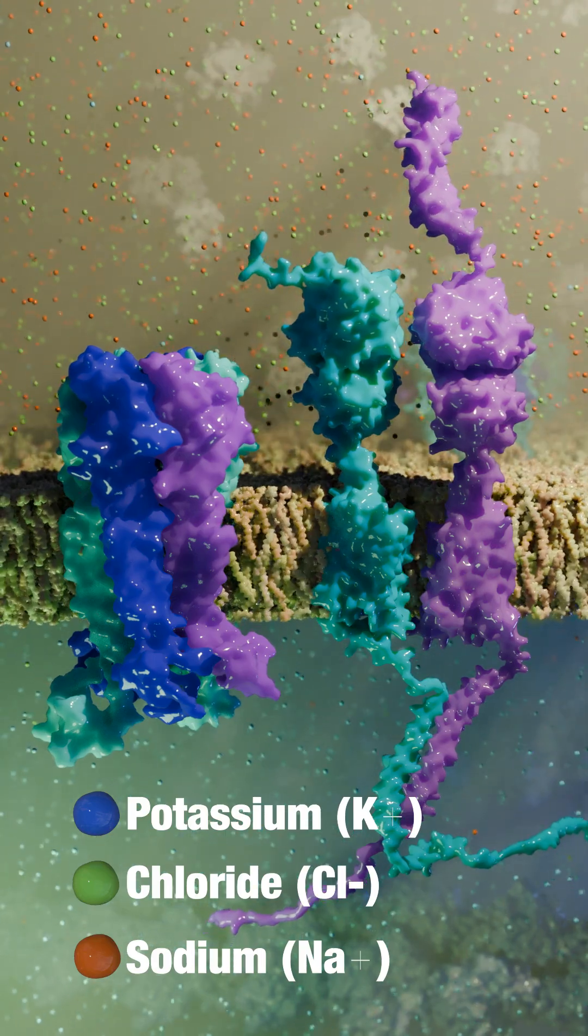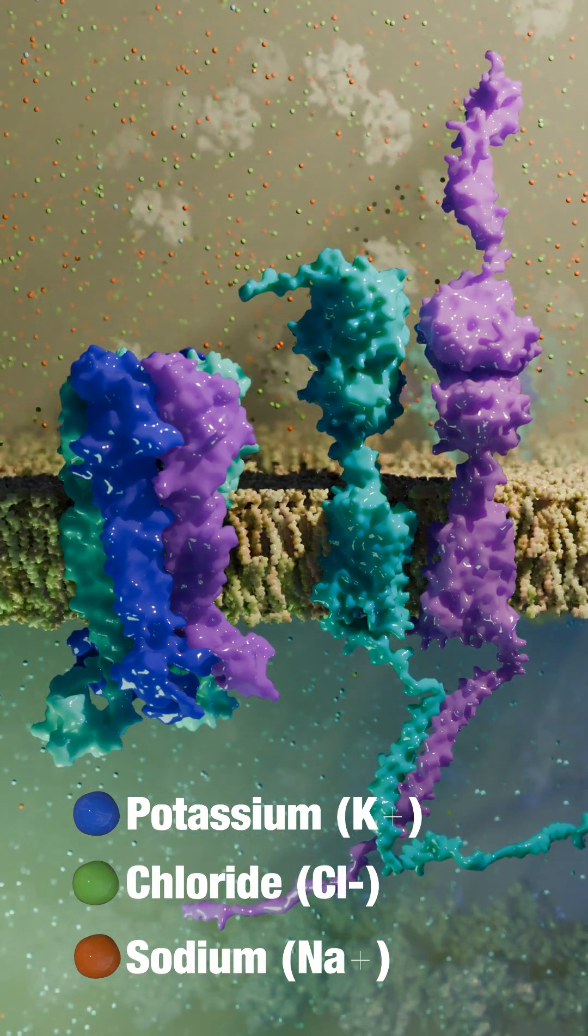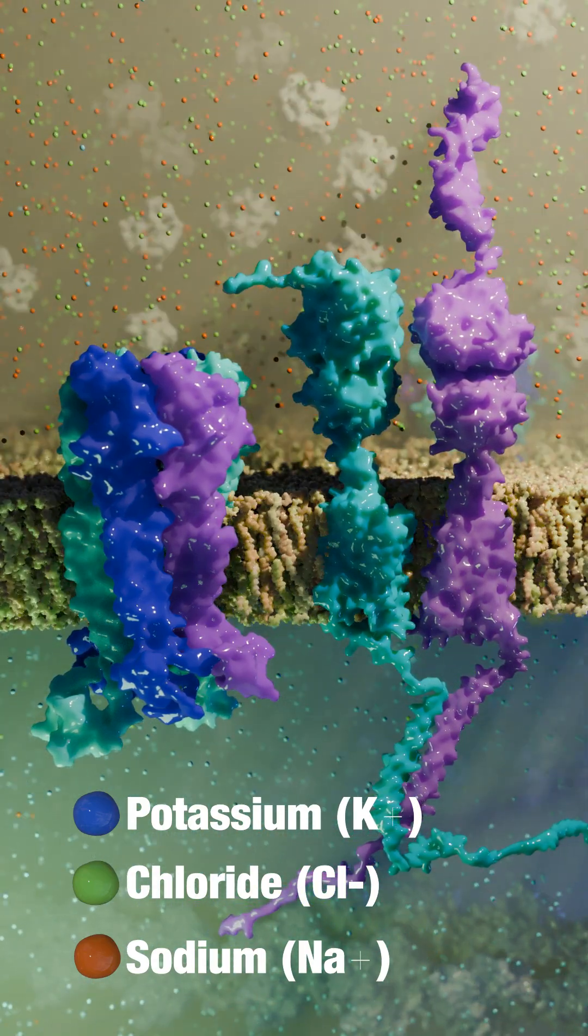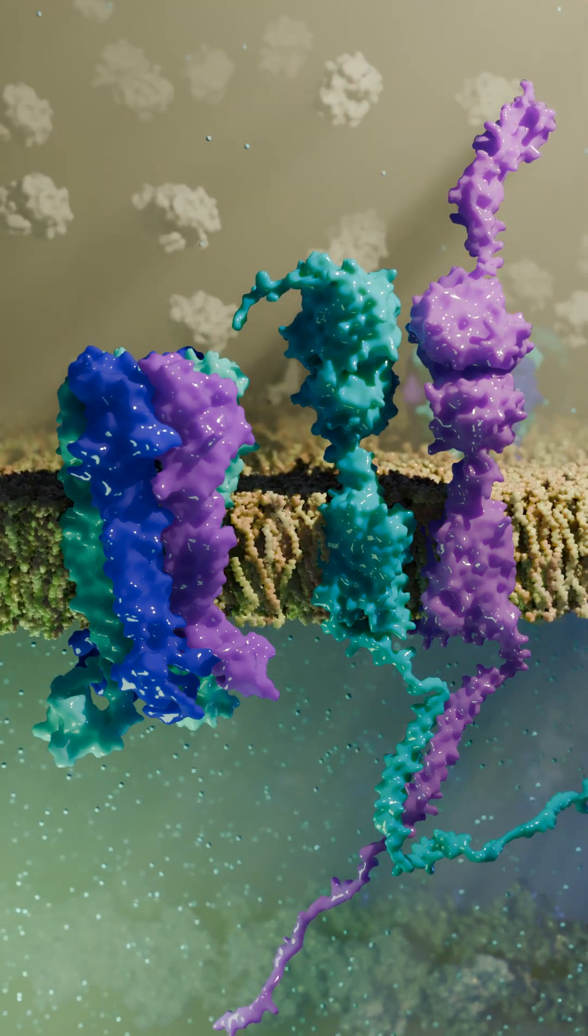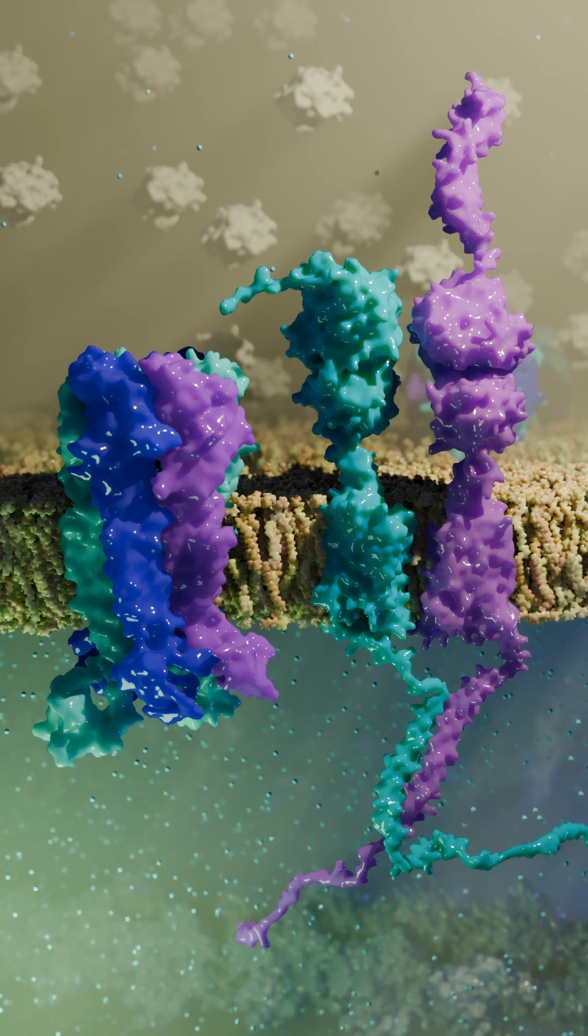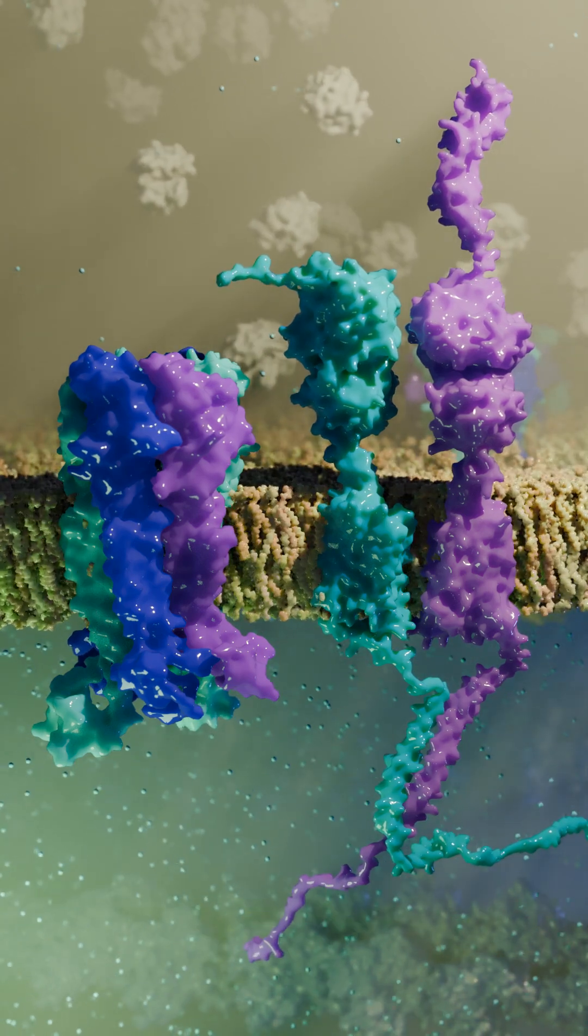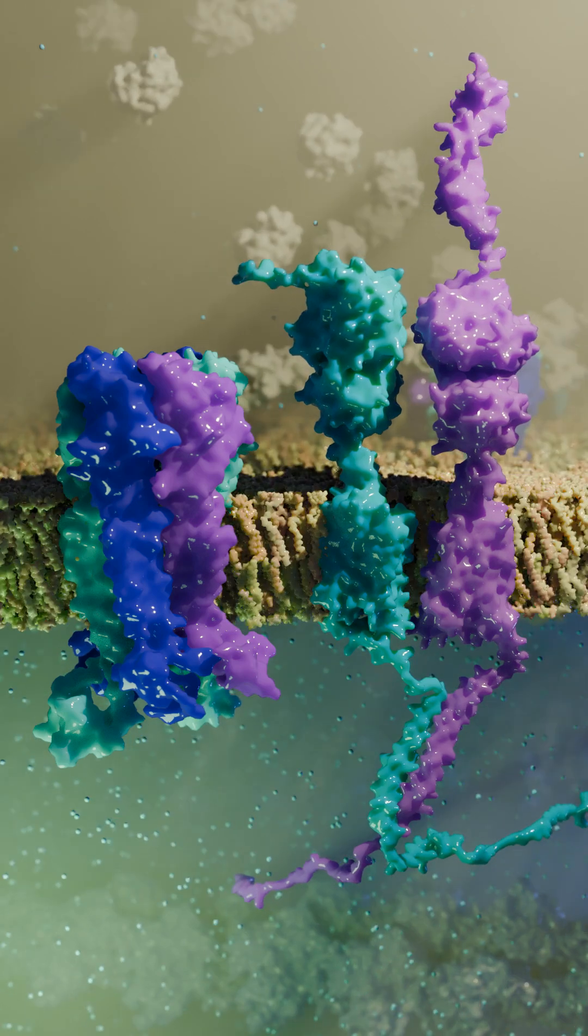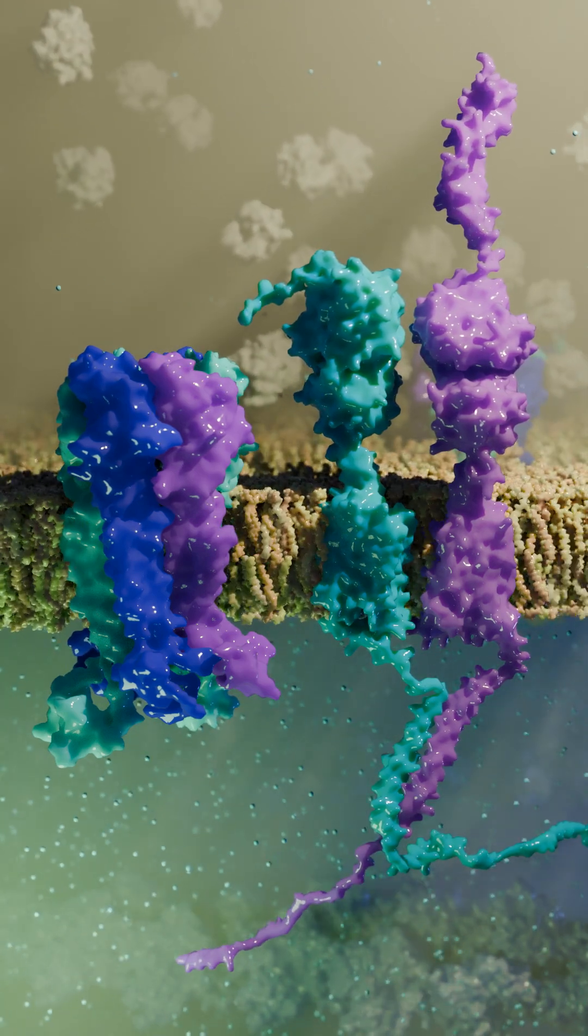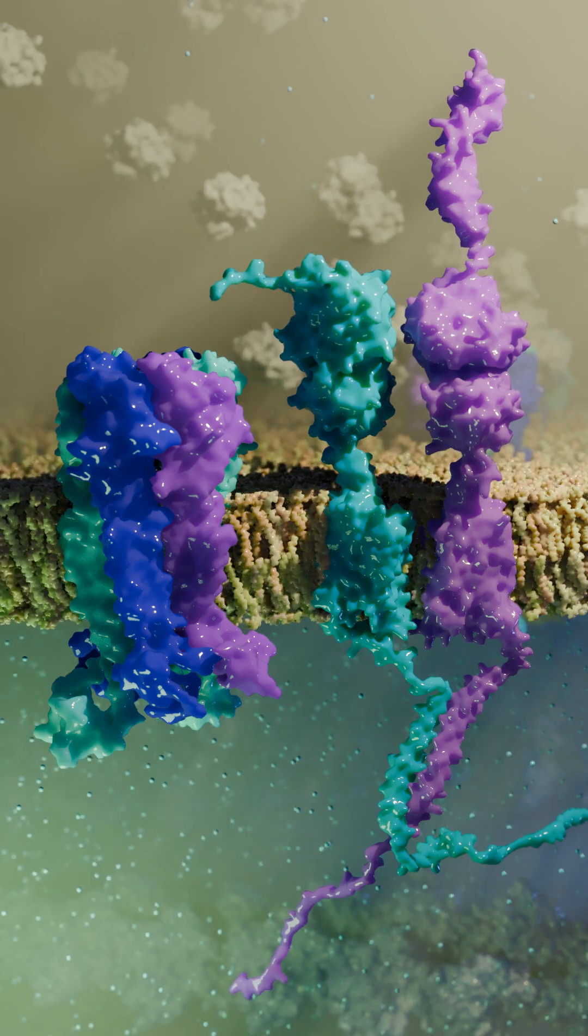While GABA-A receptors use chloride ions to modulate the membrane potential, GABA-B has this effect by changing the potassium ion concentration. Potassium is positively charged and is more abundant in the cytoplasm compared to the extracellular space. Therefore, releasing potassium into the extracellular space makes the cytoplasm more negatively charged.